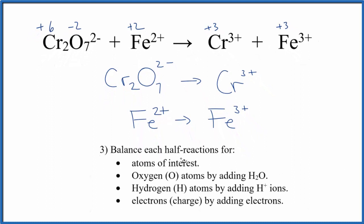Now we'll balance each half reaction. Start with the atoms of interest. These are the ones whose oxidation numbers have changed. Two chromiums here, just one here. Let's put a two. Iron, iron. That's good.